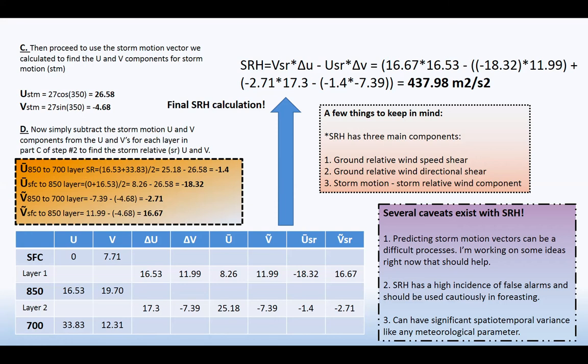But number two on the caveat list there, storm relative helicity has a high incidence of false alarm. And it should be used cautiously in forecasting. So oftentimes what you'll see, what this means is you'll have, take the Southeast cool environment or cool season setup for instance, say that storm relative helicity is 600 near Nashville, Tennessee. Well, as a forecaster, you just wouldn't want to issue a higher risk and start screaming tornado outbreak, right? Just because the SRH is pumping 650, you can't do that because your other range of conditions may not be there.